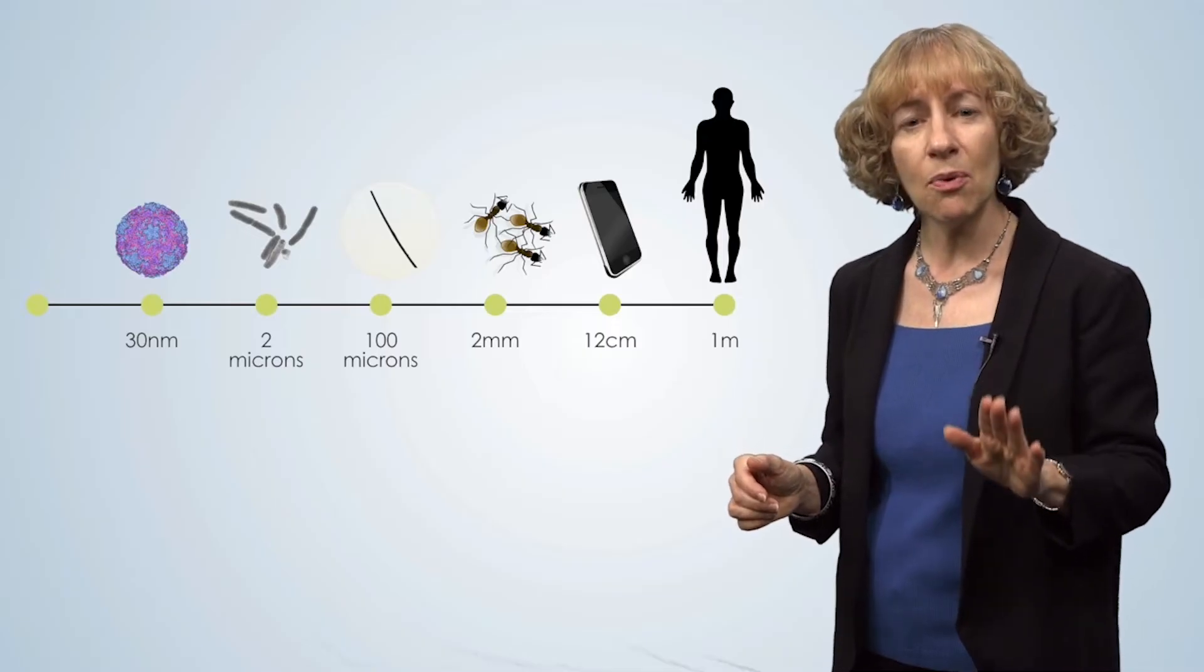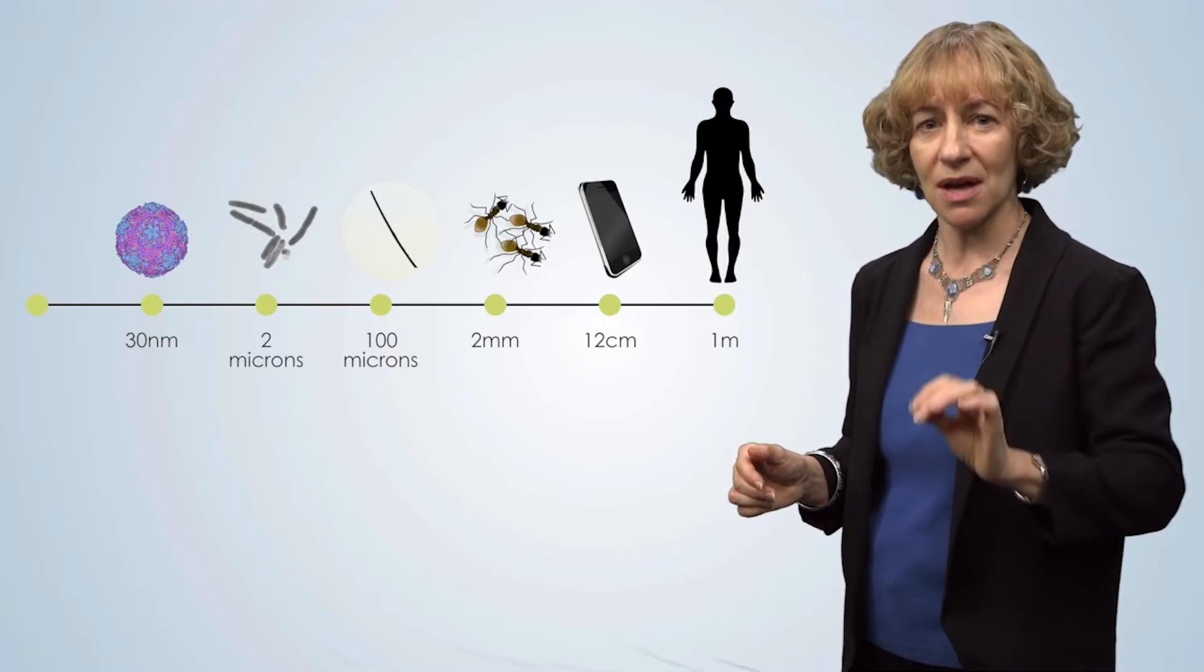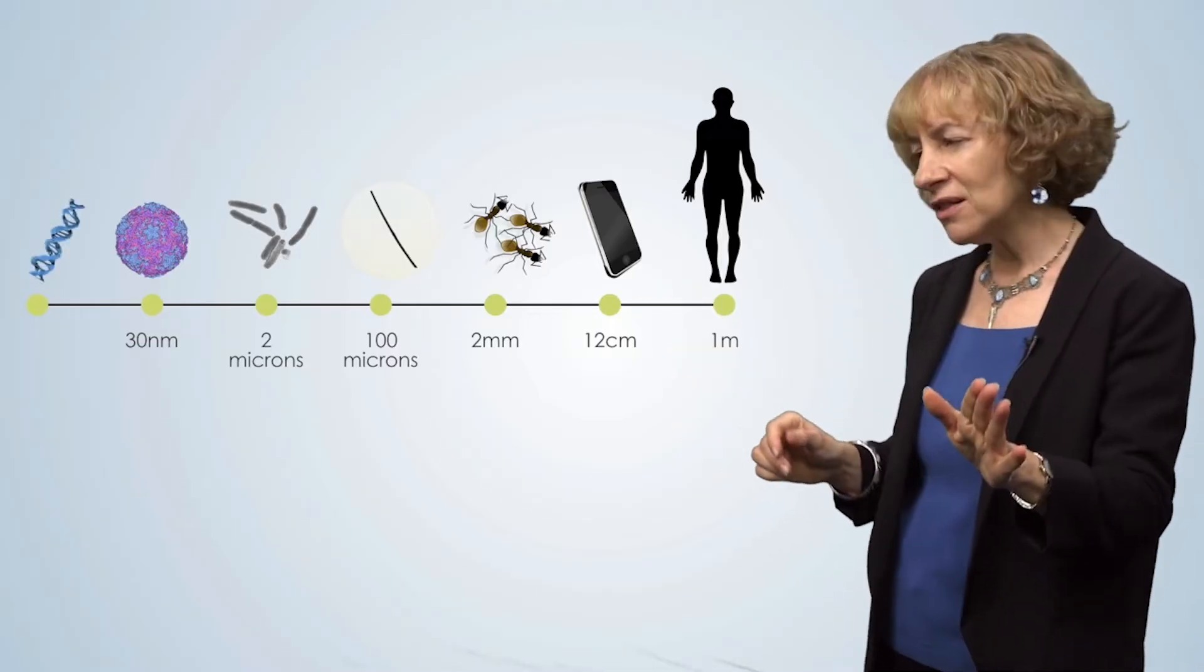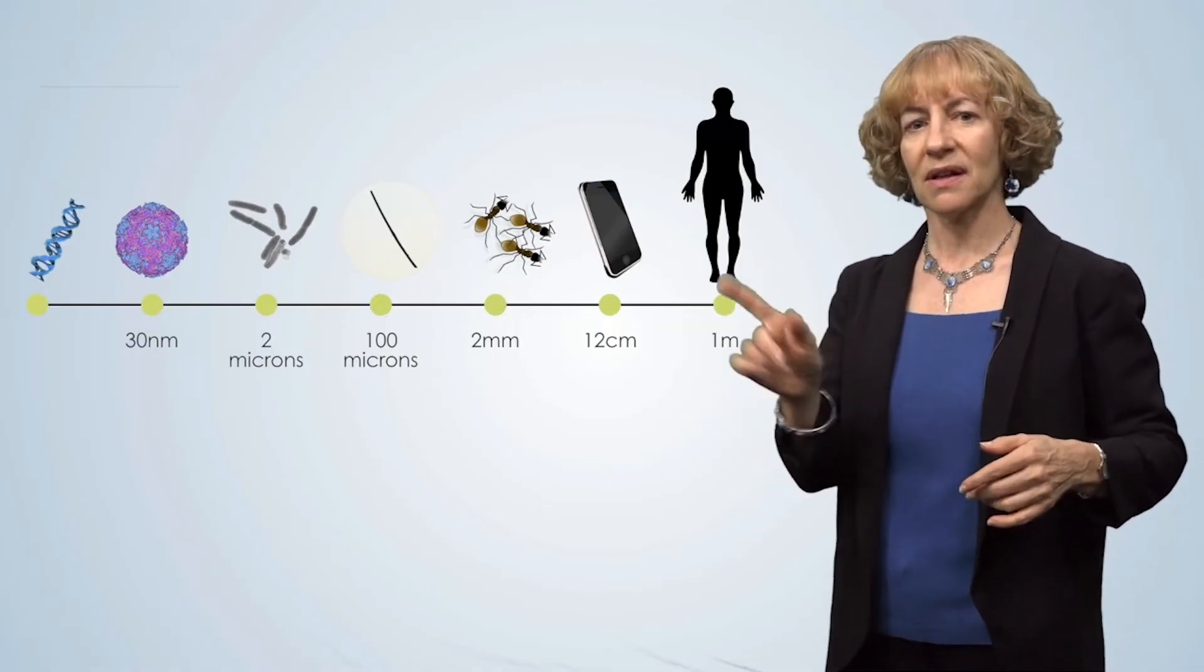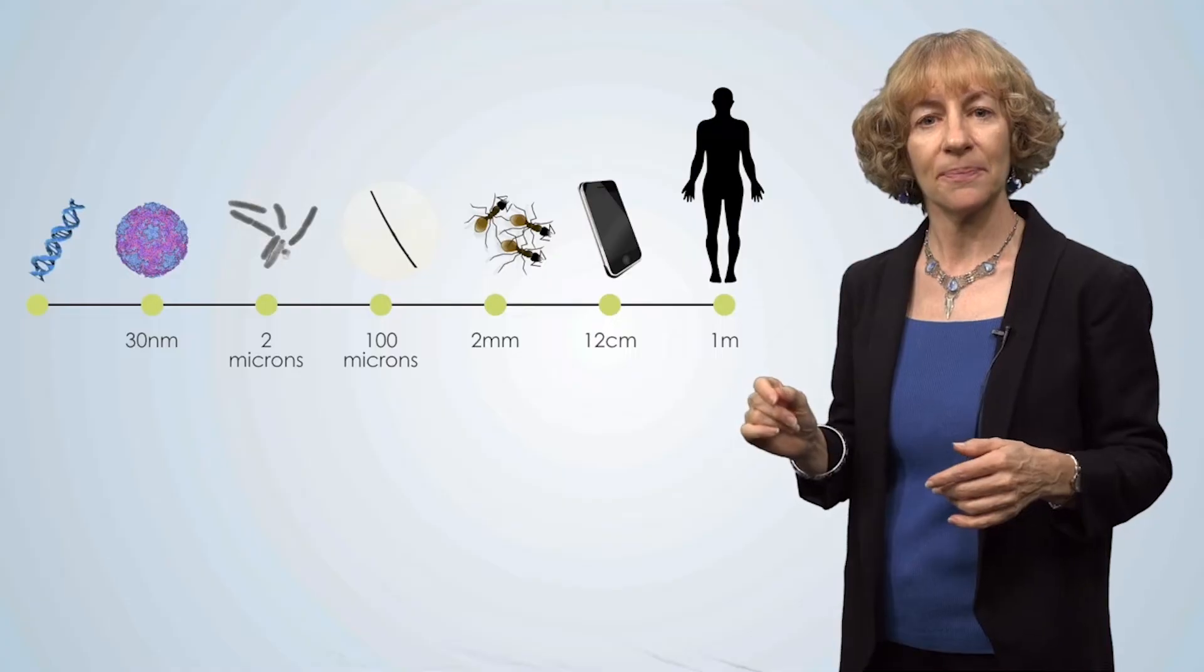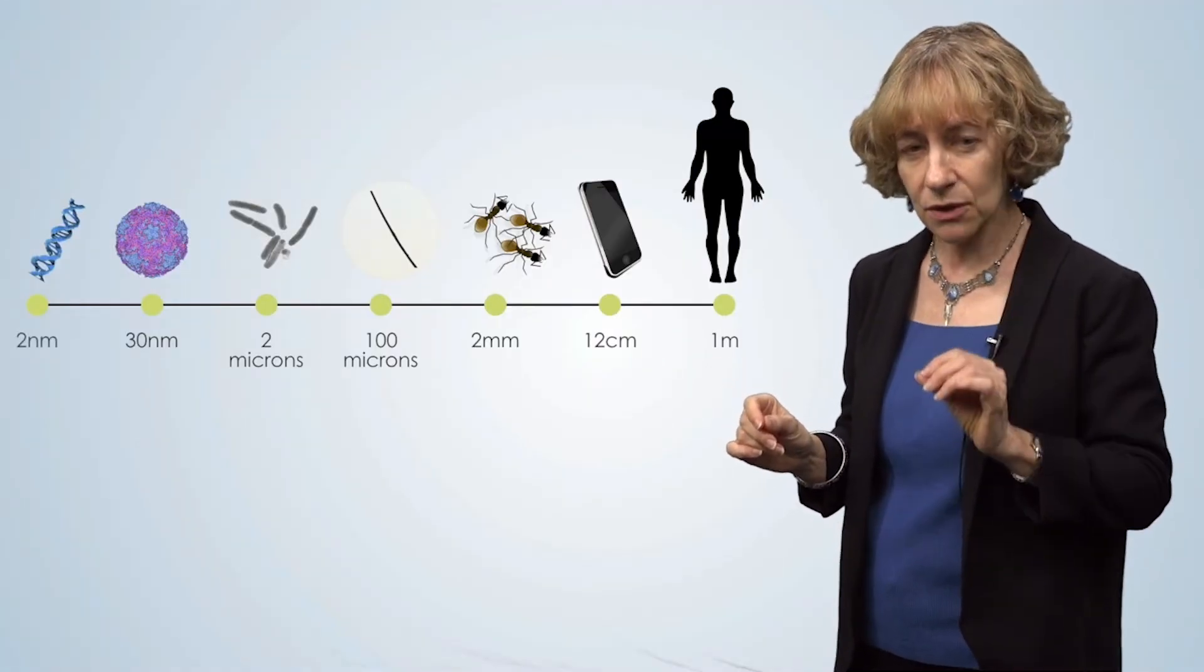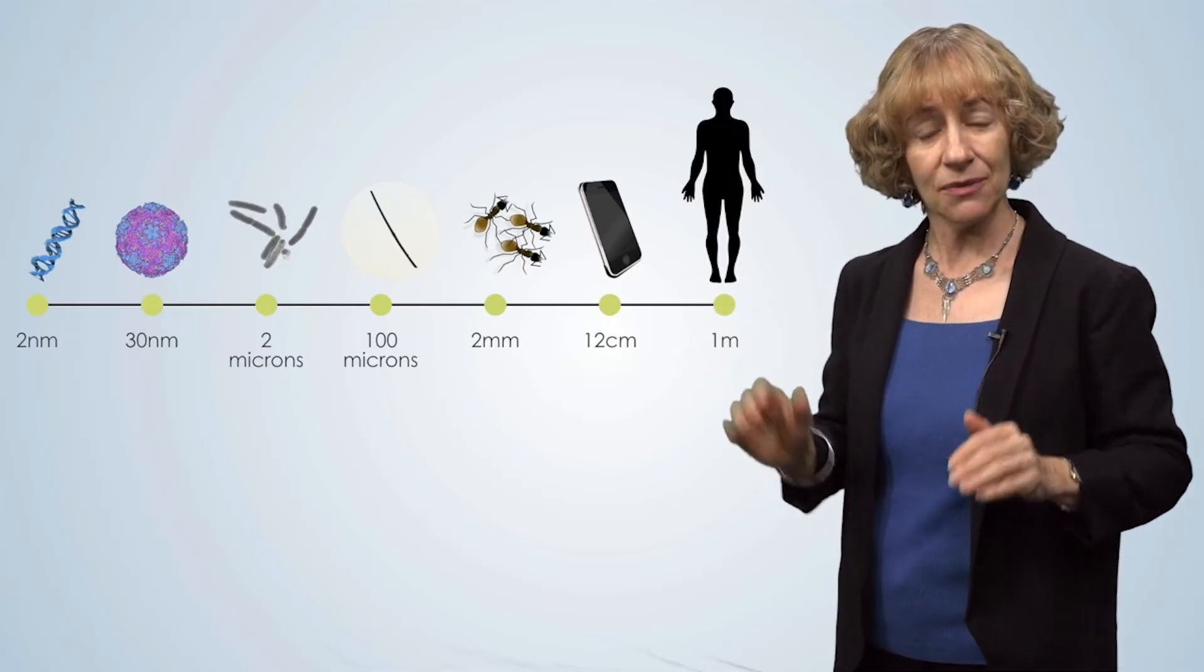That's 0.03 micrometers, which is nearly 10,000 times smaller than the diameter of a human hair. At the far left side of our scale bar, we have a DNA molecule with its characteristic helical shape. The width of the DNA helix is about 2 nanometers, which is about 1 billion times smaller than the height of a human.